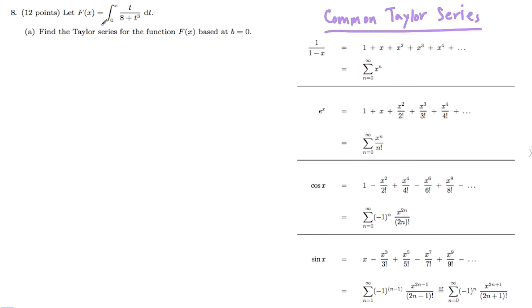So anytime I see that a function is equal to the integral of another function and we're asked to find the Taylor series, that means that we want to simplify this as much as possible and make it equal to, or not equal but very similar to, one of these common Taylor series. For us to do that, we have to get rid of this integral.